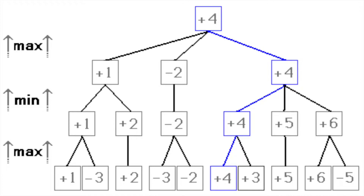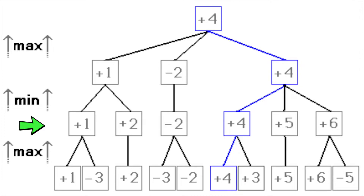The first step in programming it was to actually understand the algorithm. In Minimax, the objective is to maximize and minimize depending on the person's turn. When it's white's turn, white is trying to maximize the score and black is trying to minimize it. In Minimax you typically start at the bottom of the tree and go up — white maximizes, then black minimizes, then white maximizes again, and that's the move that gets played.